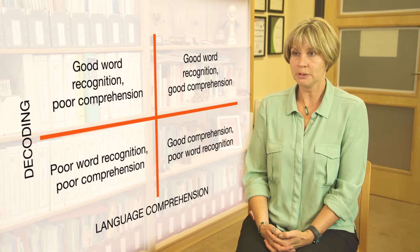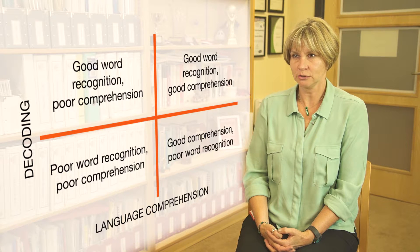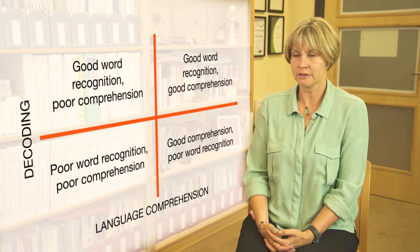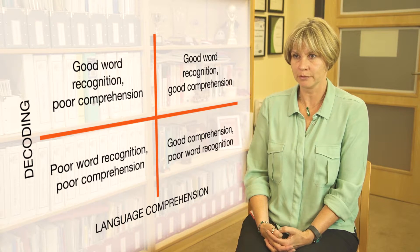A proficient reader will be good at language comprehension and good at decoding. Other children may have a weakness in one of those areas, and in some cases it may be both. This tool can be used as an effective diagnostic system to identify areas for children to develop in their reading.